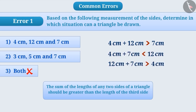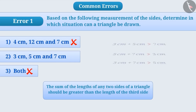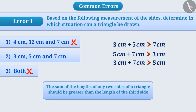For option 1, by looking at the second situation, we find that the sum of the measurements of two sides is not greater than the length of the third side. Therefore, a triangle cannot be drawn from those lengths, and option 1 is incorrect. In option 2, since in all three situations the sum of any two sides is greater than the third side, we can say that a triangle can be drawn based on the measurements given in option 2.